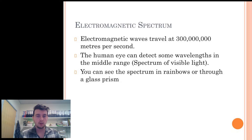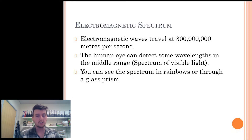A good example of the spectrum of visible light is a rainbow. With the mist in the air, the light is being refracted through the droplets, causing you to see these colours.